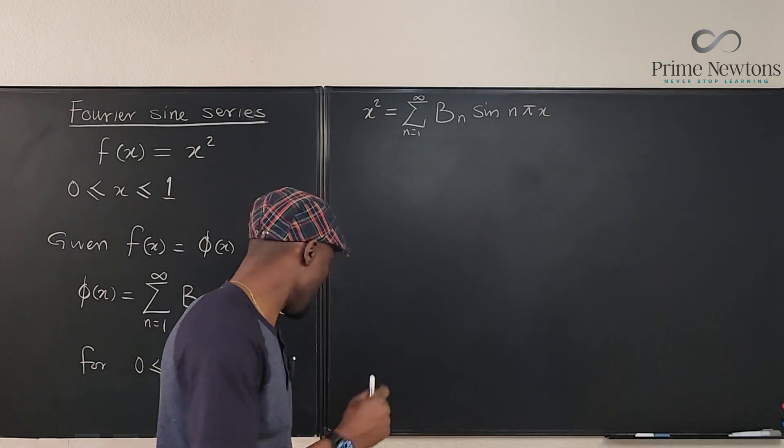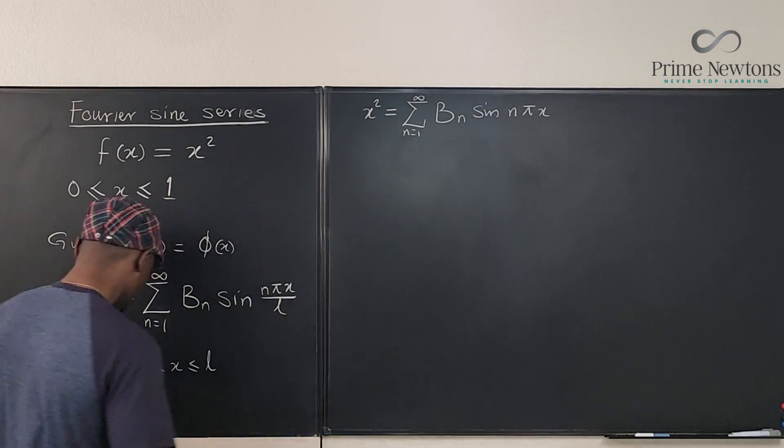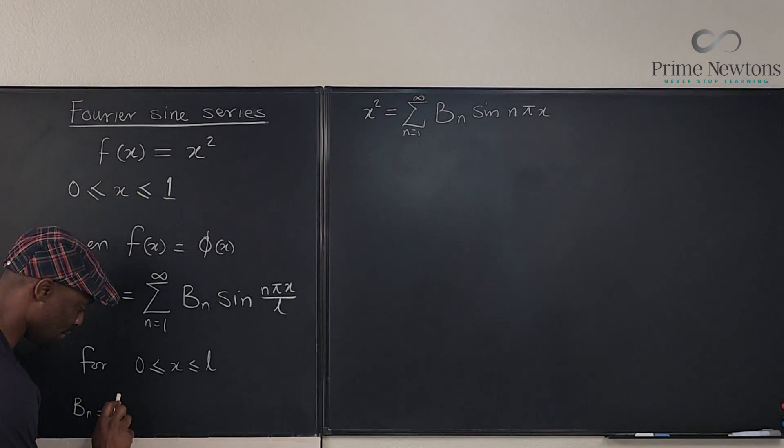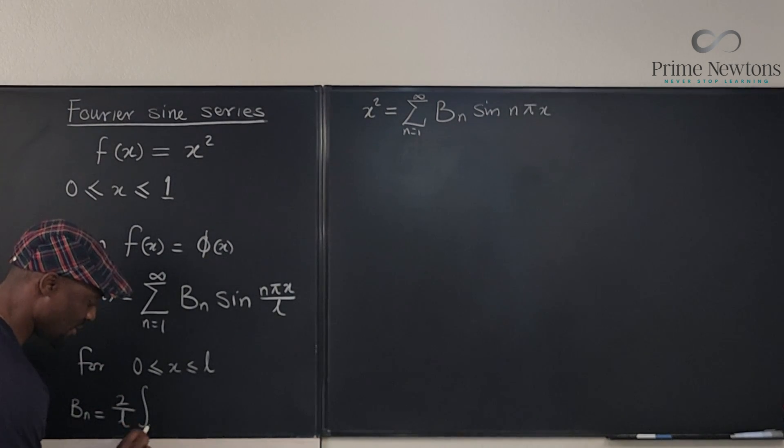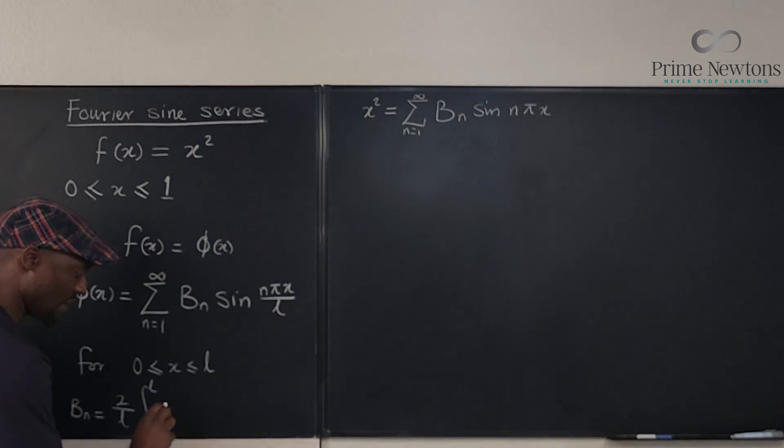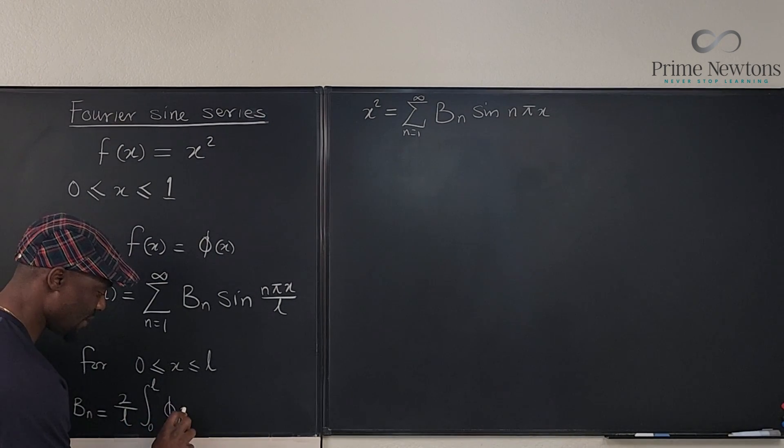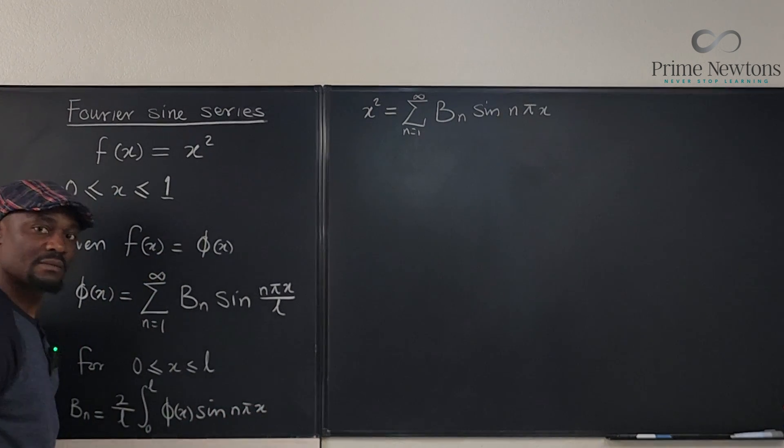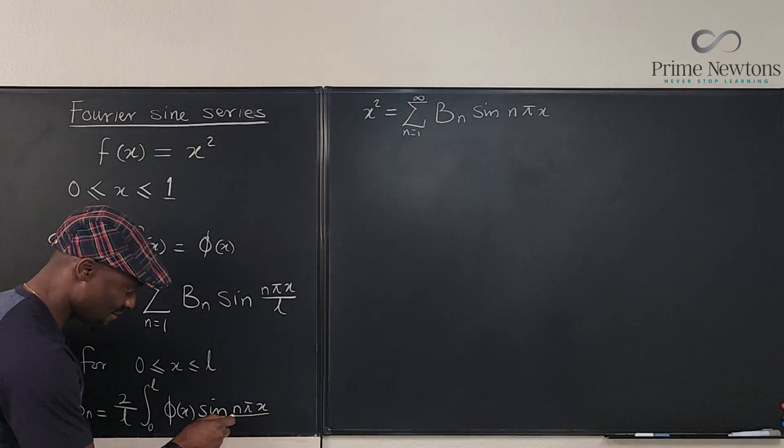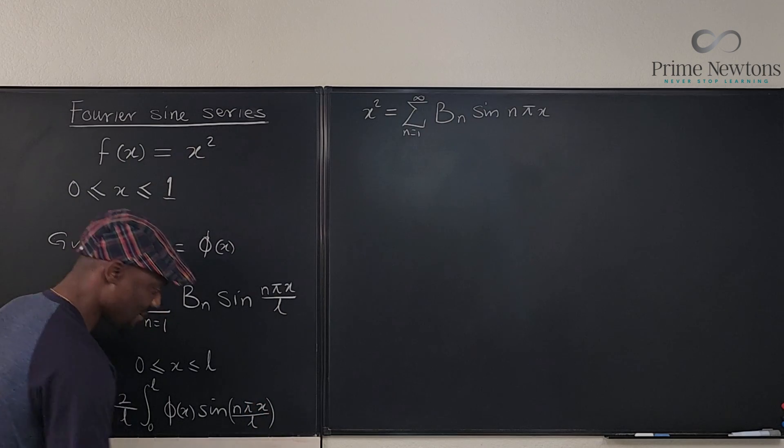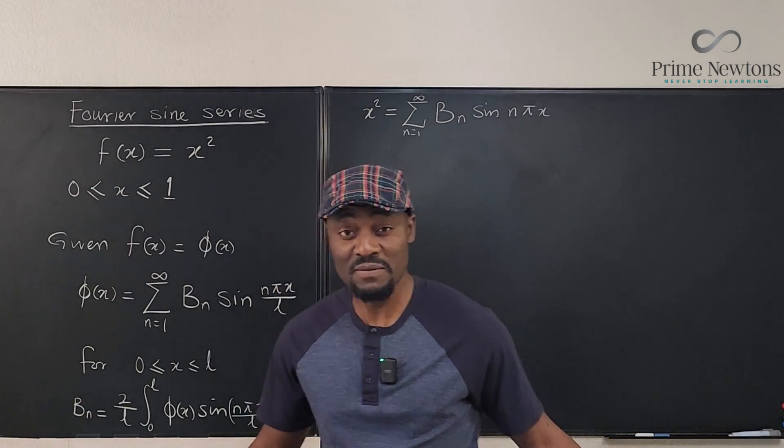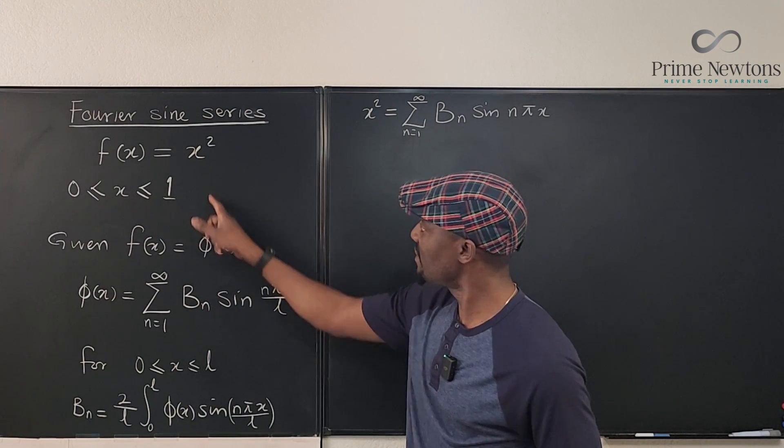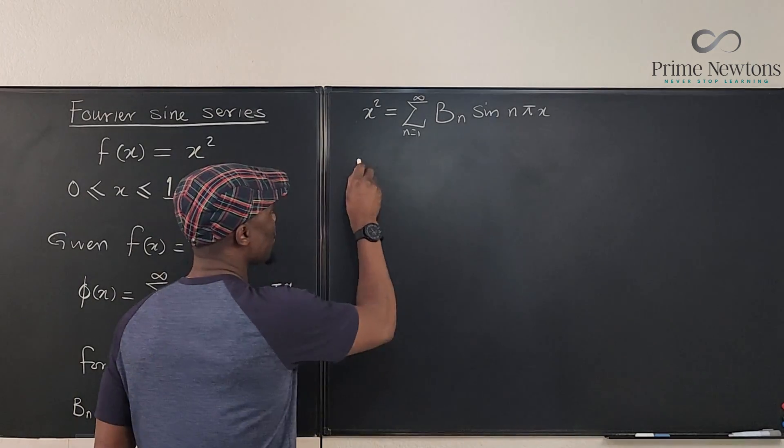There's a formula for b sub n, which I should add on this side. Note that b sub n is always equal to 2 over l times the integral from 0 to l of the function that you're given multiplied by sine n pi x over l. It looks like there are too many formulas, but it is the same thing we're recycling. So let me just write it out.